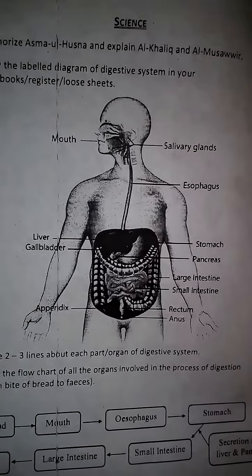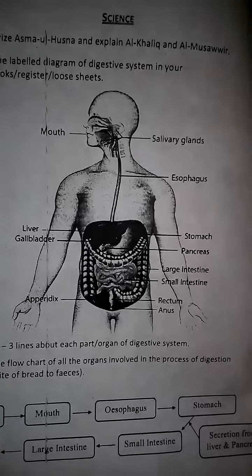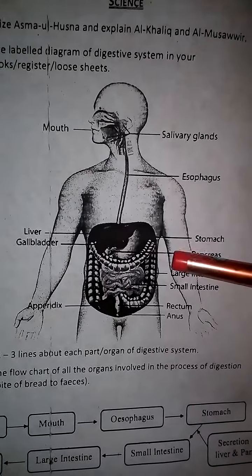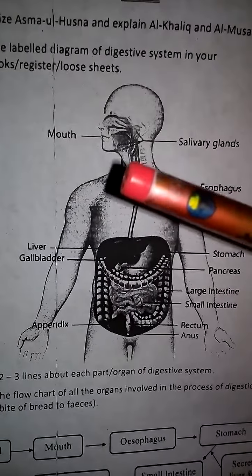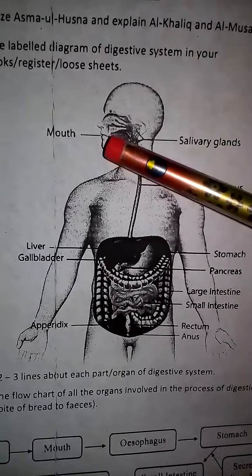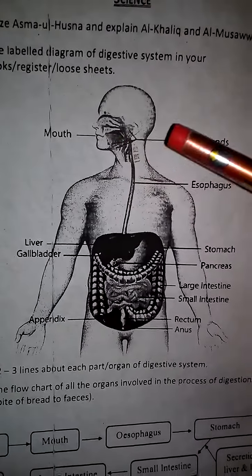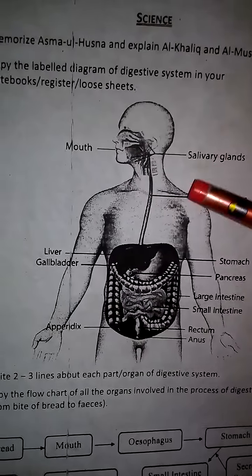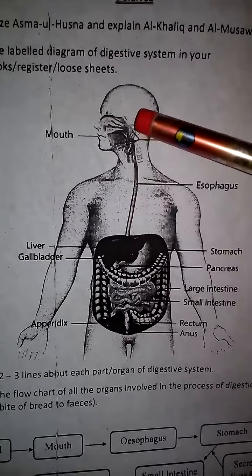So here is the diagram of the digestive system. The digestive system starts from our mouth, and after the mouth there is the presence of salivary glands. There is also a tube or tract which is known as the esophagus.